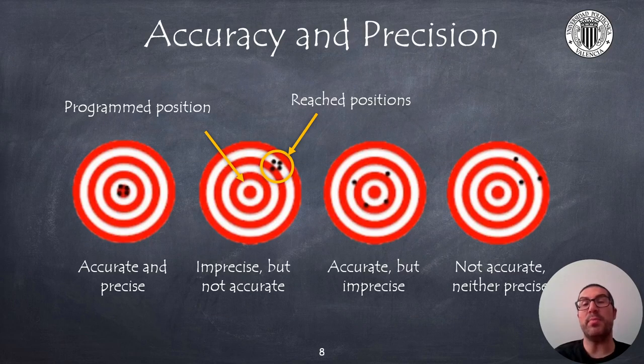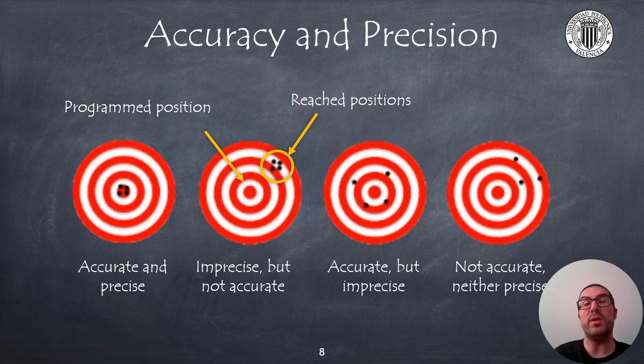The accuracy and precision are two different concepts that must also be considered in order to select a robot. Industrial robots are usually precise and accurate, but these terms are relative to the accuracy and precision required by the application.